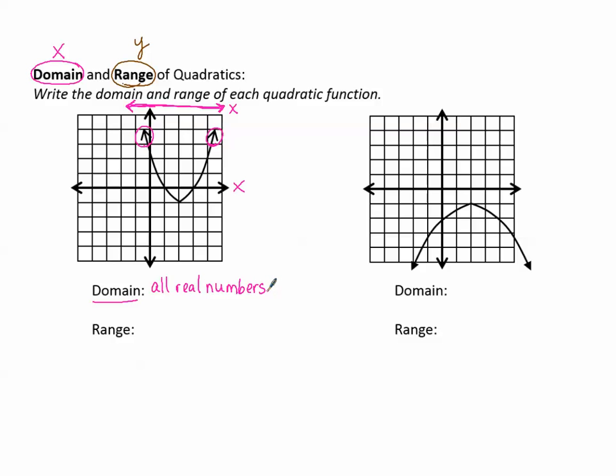Remember that another way to write all real numbers, a shorter way, is with the squiggly bracket, x, such that x is an element of the set of all real numbers. A quadratic function will always have the domain all real numbers, because it will always be this u-shape, whether it's opening up or opening down, and it will always be going to the left and to the right forever. So if we see a quadratic function, or a parabola graph, then we know to always write for the domain all real numbers.